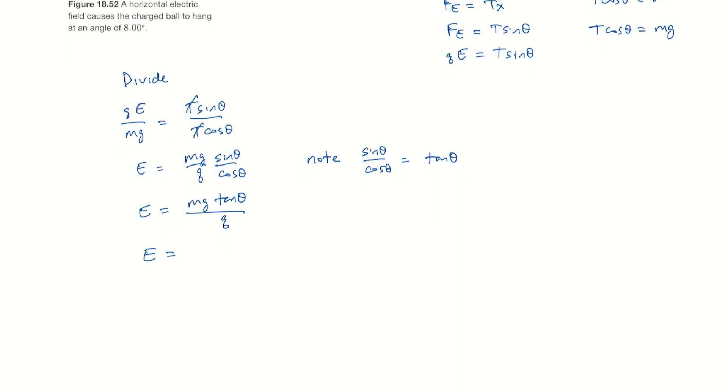And so e is the mass—we said the mass was five grams. We need that in kilograms, so five grams is 5 times 10 to the minus three kilograms. g is the acceleration due to gravity, 9.8 meters per second squared.